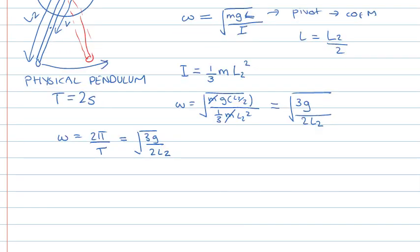So let's do a bit of rearranging of that. So first thing first, square both sides. So 4 pi squared over T squared equals 3g over 2 times L2. And again, we want to make L2 the subject of the equation. That's what we're trying to find out. So it gives us 3 times g times the period squared divided by 8 times pi squared.